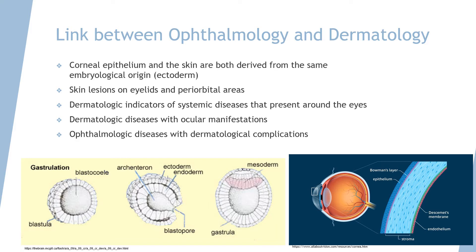The dermatological indicators of systemic diseases can present around the eyes as well. There are also skin diseases with ocular manifestations, and lastly, eye diseases with skin-related complications.